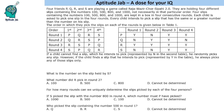Hello everyone, welcome to Aptitude Jab. This is a logical DI set. There are four friends P, Q, R, S. They are playing a game called Raja Vazir Chor Sepai 2.0. They are holding four different slips containing the numbers 100, 500, 800, and 1000 — not necessarily in that order. There are four slips with the same numbers, kept in a box, used in four consecutive rounds.